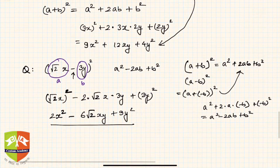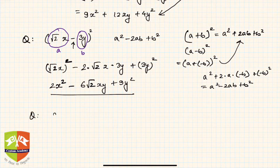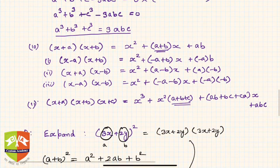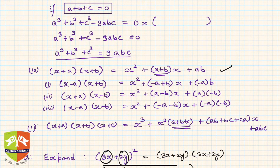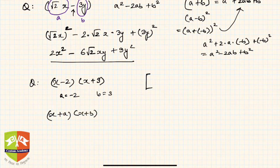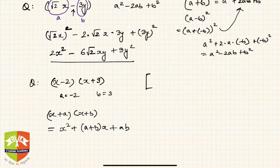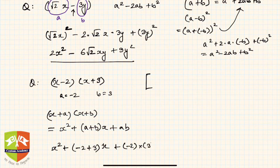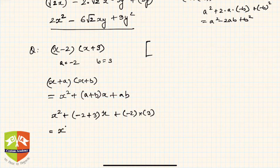Next question: expand x minus 2 times x plus 3. This matches the identity x plus a times x plus b equals x square plus a plus b times x plus ab, where a is minus 2 and b is 3. Substituting: x squared plus minus 2 plus 3 times x plus minus 2 times 3, which simplifies to x squared plus x minus 6.